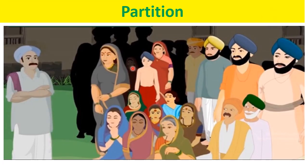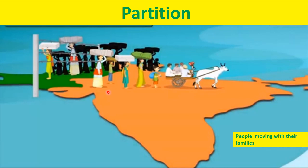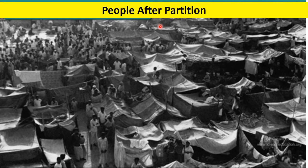At that time, people were asked to choose where they wanted to live — whether in India or in Pakistan. Those who wanted to live in India packed their bags and moved to India, and others stayed in Pakistan. After partition, people were staying in tents, and it was a really tough time for them.